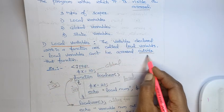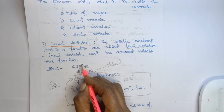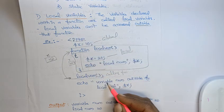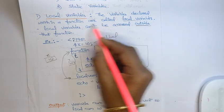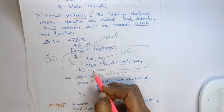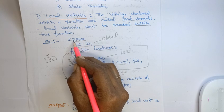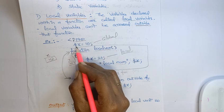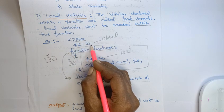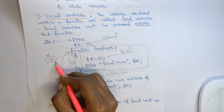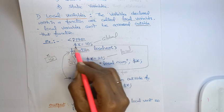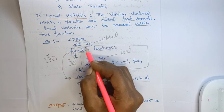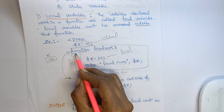Local variables cannot be accessed outside of the function. Here I have taken a simple example to define a local variable. Within a function, PHP code is written inside the tags — less-than question-mark php. I have declared one variable: dollar x equals 10. This variable is declared outside of the function, not inside, so this is a global variable.